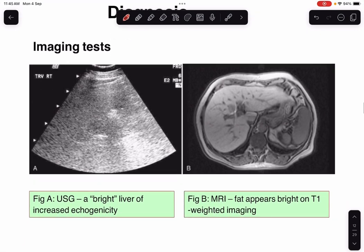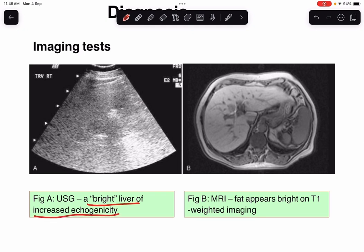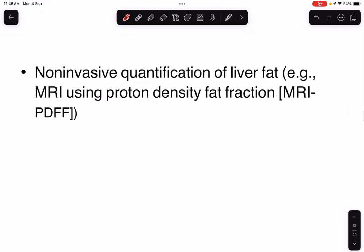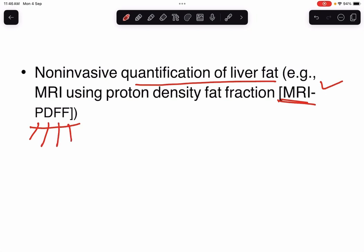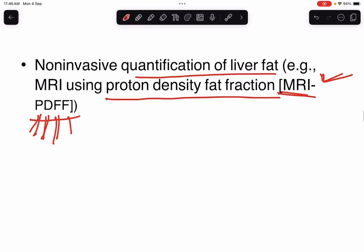On ultrasonography, the liver looks very bright with increased echogenicity. On MRI T1-weighted images, the liver also looks very bright because fat appears bright. Non-invasive quantification of liver fat can be done with MRI-PDFF — Magnetic Resonance Imaging Using Proton Density Fat Fraction. Among non-invasive tests to detect fibrosis, we have Magnetic Resonance Elastography, Transient Elastography, and FibroScan, which has become very popular.